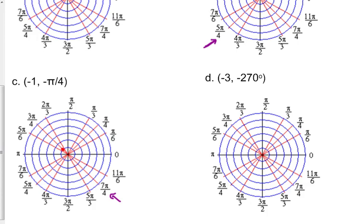If it's a negative radius, then that just means you go through to the other side.